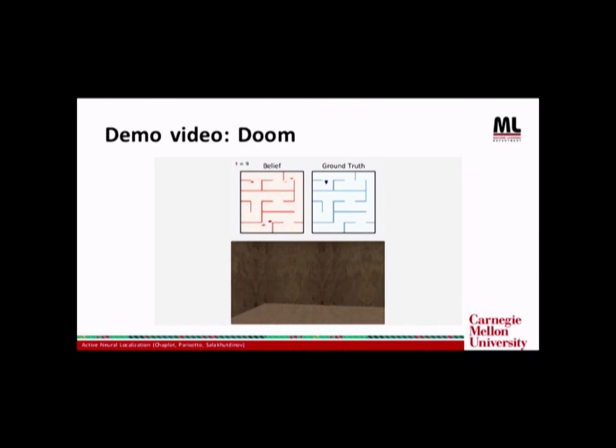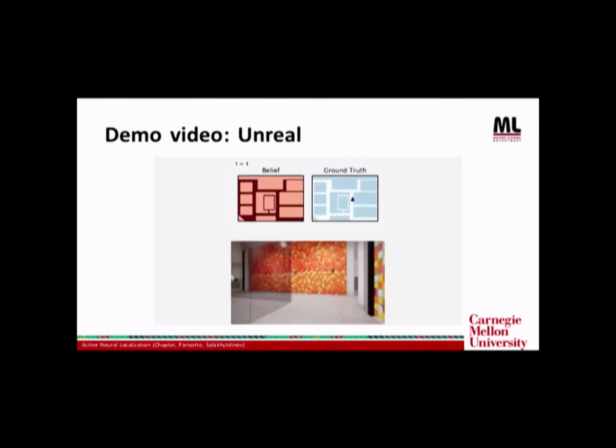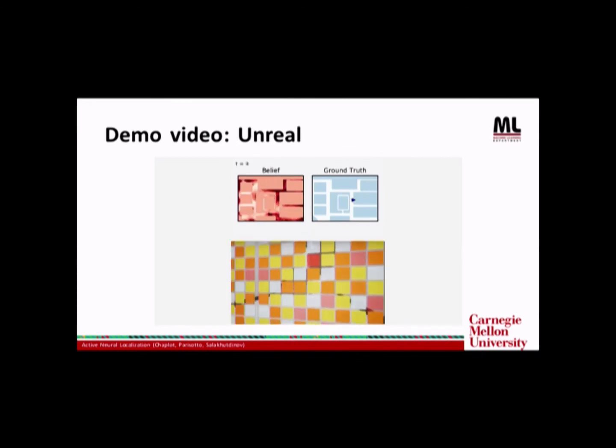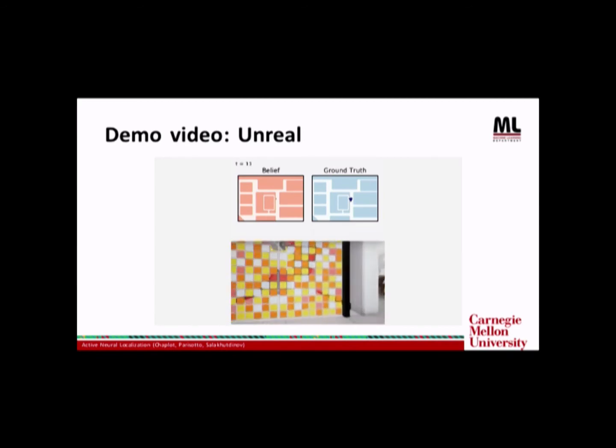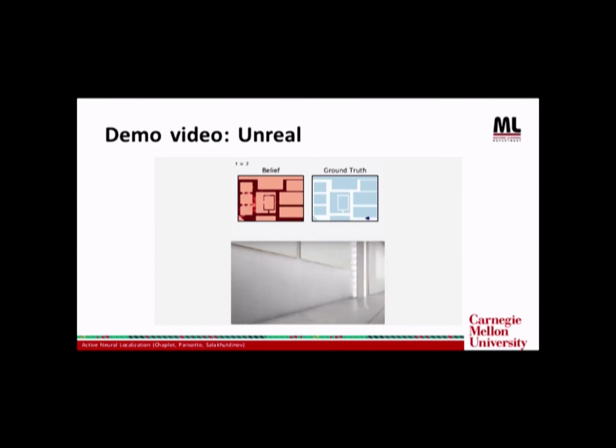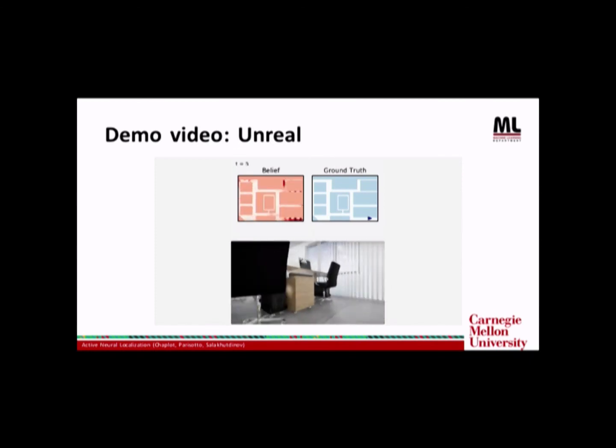So this is the demo video of the agent localizing in the Doom environment. As you can see, these mazes are quite challenging to localize in because all the walls look very similar and the agent only receives RGB pixel-based input. So we take this model trained in the Doom environment and then test it on the Unreal environment and it still works pretty well. This is an environment of a modern office space in the Unreal game engine. As you can see, it's much more realistic than the Doom engine and the agent is still able to localize.